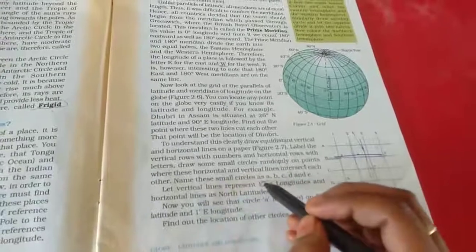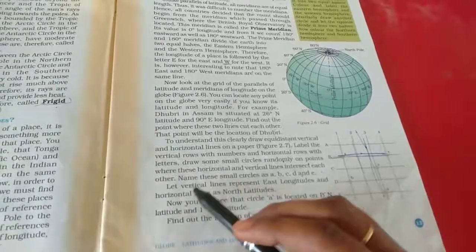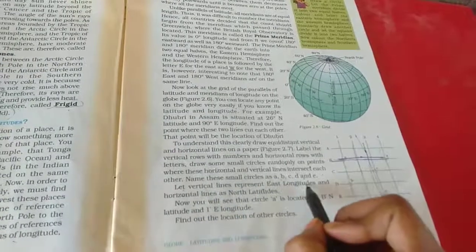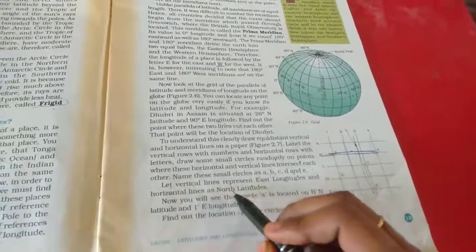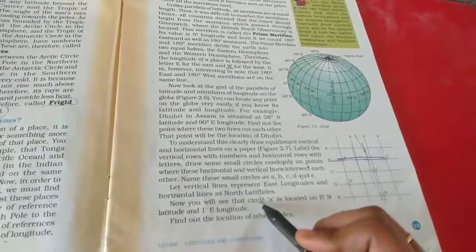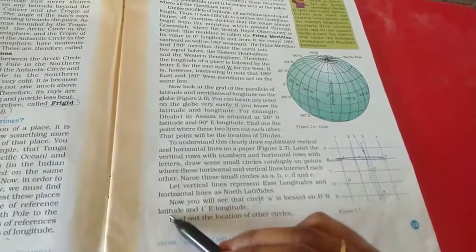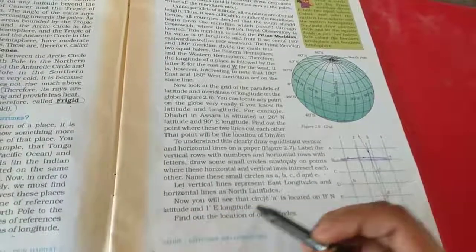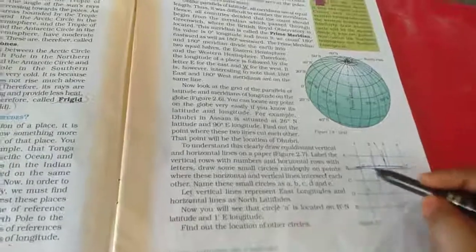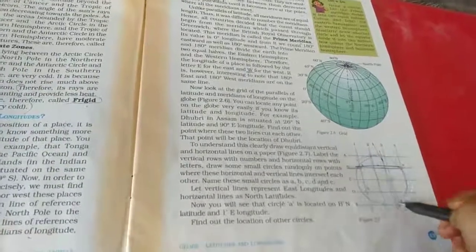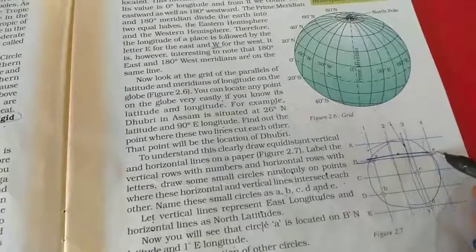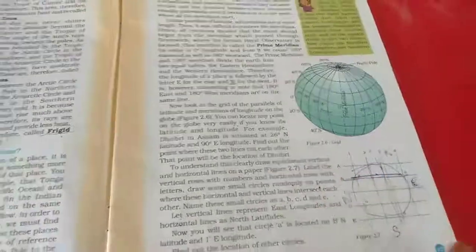Draw some circles randomly at points where these horizontal and vertical lines intersect each other. Name these small circles as A, B, C, D and E, small letters. Let vertical lines represent east longitudes and horizontal lines are latitudes. Now you will see that circle A is located on 8 degrees north latitude and 1 degree east longitude. So we just imaginarily we have to draw the circle here. Where is the letter? Here, the E, this is the east. So this is south, this is north, this is west. So just we have to call some of the places like this.